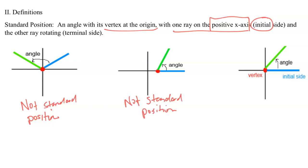The third picture is drawn in standard position because both required conditions are satisfied: the initial side is on the positive x-axis and the vertex is at the origin. Whenever we draw an angle, we need to make sure we're doing it in standard position with the vertex at the origin. The initial side is always going to be the positive x-axis — that's where zero degrees and zero radians always is.